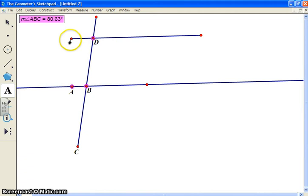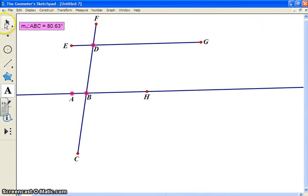We might need to add some labels to some points as well before we do this. Just add letters to each of these points. So now again, we should be able to select three points and measure the angle they create.